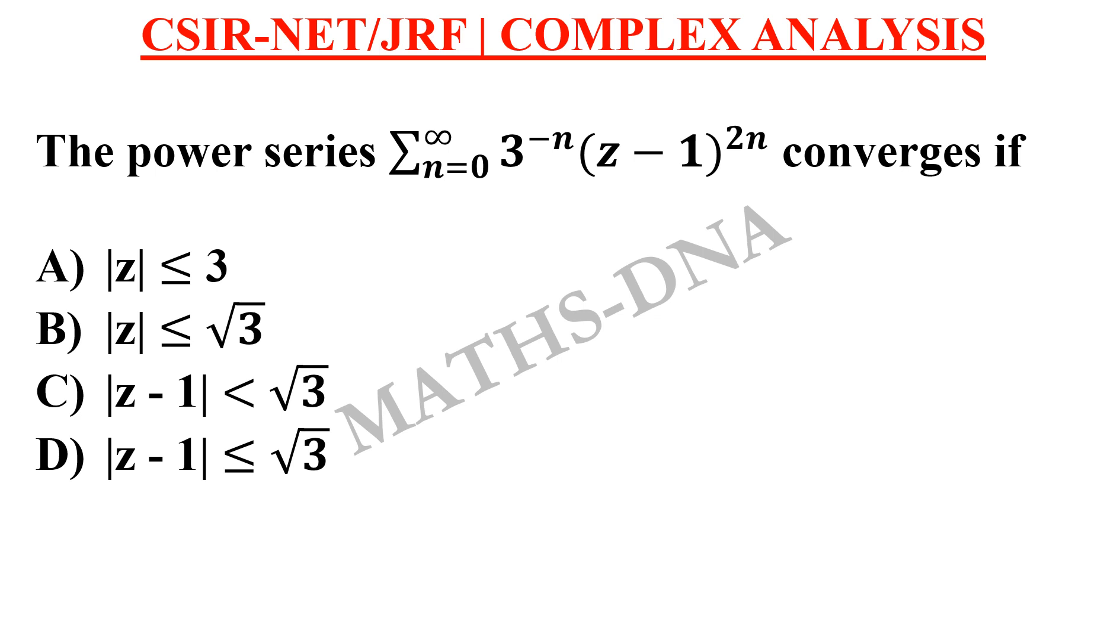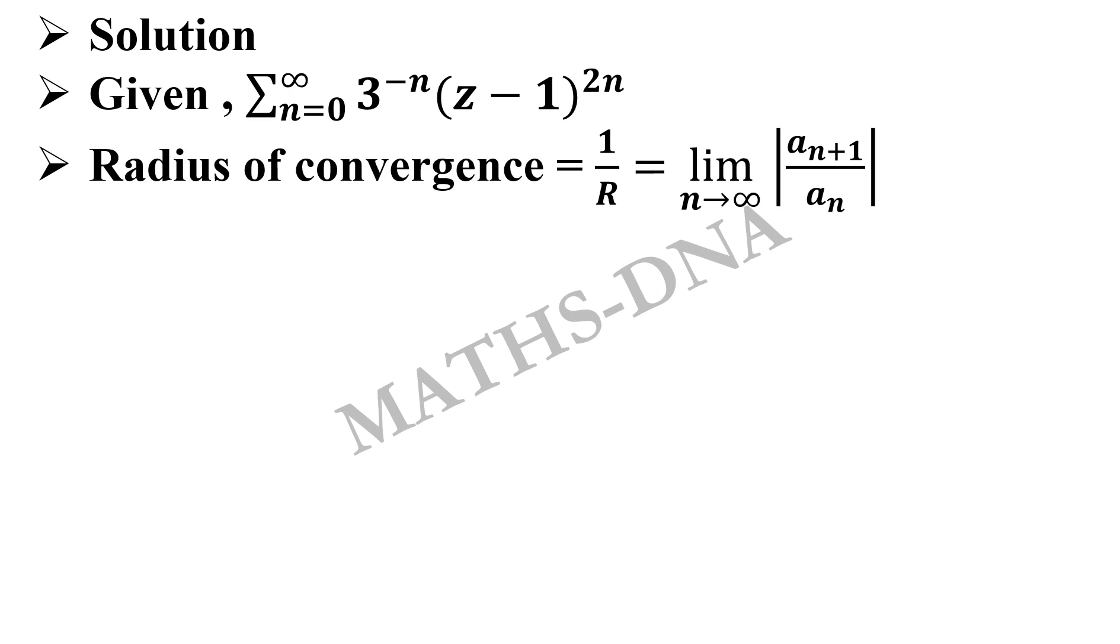This is based on the radius of convergence. Let us solve this. As per the given series, it is summation n running from 0 to infinity 3 raised to minus n into z minus 1 raised to 2n. Firstly, we find the radius of convergence which is 1 upon R equals to limit n tends to infinity modulus of a sub n plus 1 upon a sub n.